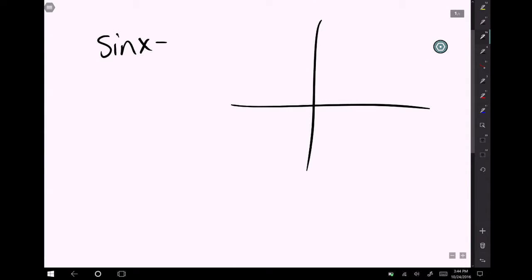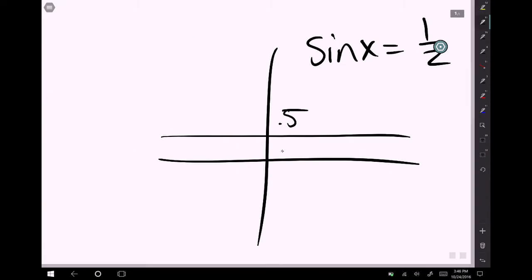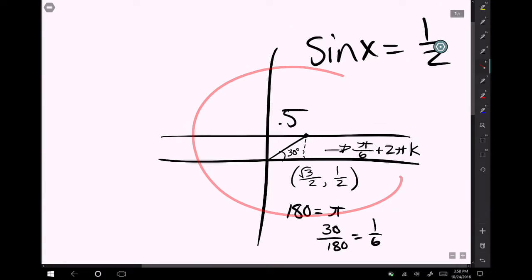By saying sine x equals 1 over 2, we're asking the question, where on the circle does y equal 0.5? Because, as we already know, sine is y. To answer this question, we first draw a line through 0.5 on the y axis. Then, we connect this line to the origin, creating a reference angle. If you know your unit circle points, you would know that the point is square root 3 over 2 comma 1 over 2, which makes a 30 degree angle. Since we know that 180 degrees is the same as pi, and 30 degrees is a sixth of that, the definition of this angle is pi over 6 plus 2 pi k. The 2 pi k is just used to show that the radian will repeat itself in 360 degrees.